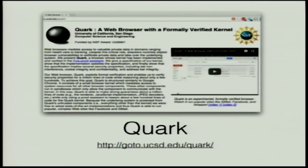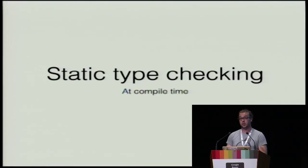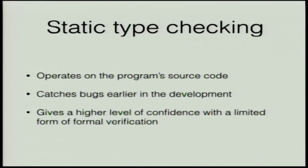So we have type safety and type checks, and there are two ways of doing type checks. The first is static type checking, which is done at compile time. In static type checking, every variable is bound to a type during the compiler phase. It operates on the program source code without needing to run the executable. Since it runs on source code, it helps you catch bugs earlier in your development cycle, giving you a higher level of confidence. Depending on the type system, it can also be a limited form of formal verification.